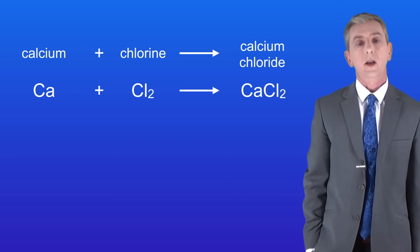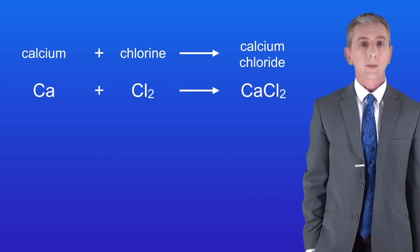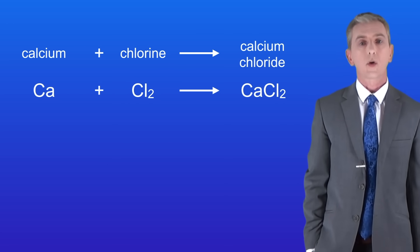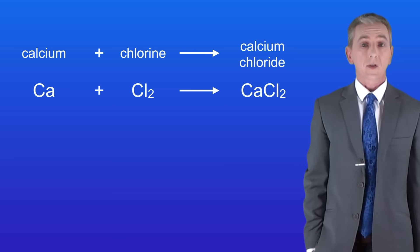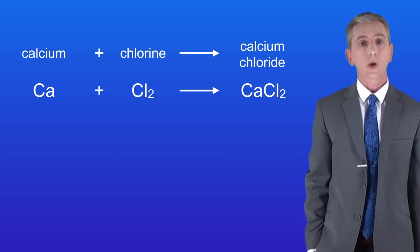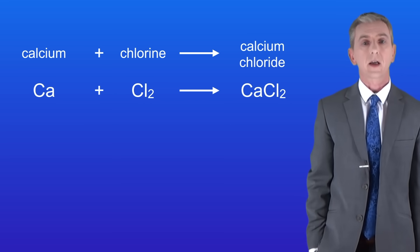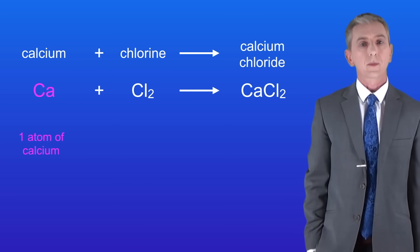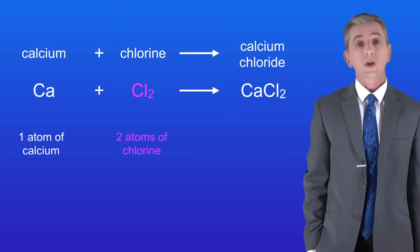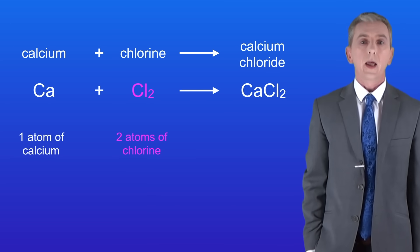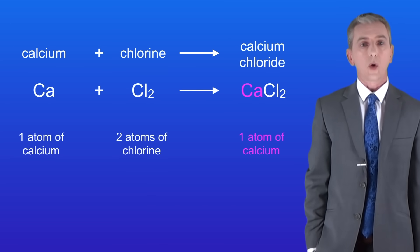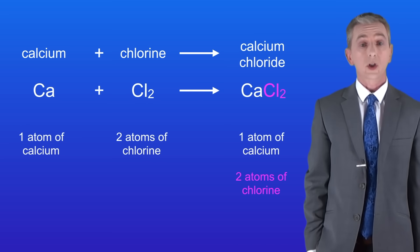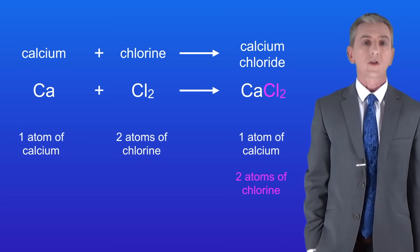Here's a chemical reaction: calcium plus chlorine makes calcium chloride. This is a balanced chemical equation because the number of atoms of each element is the same on both the left hand side and on the right hand side. On the left hand side we've got one atom of calcium and two atoms of chlorine, and on the right hand side we've also got one atom of calcium and two atoms of chlorine. So this equation is balanced.